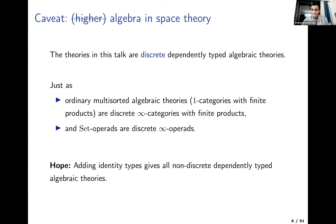Here's a rather important caveat: in this talk, I will only talk about discrete dependently typed algebraic theories. I mean discrete in the same way that ordinary multi-sorted algebraic theories are discrete infinity categories with finite products, versus something like simplicial algebraic theories. Set operads are discrete infinity operads. The hope is that adding identity types to the syntax corresponding to the algebraic gadgets I'm going to describe should give us all non-discrete dependently typed algebraic theories in a way that combines well with what I'll talk about today.